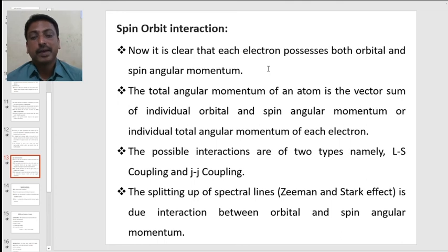The possible interaction between spin and orbit are two: LS coupling as well as JJ coupling. The splitting up of spectral lines like we used to see in case of Zeeman and Stark effect is especially due to the interaction between the orbital as well as the spin angular momentum. Spin-orbit interaction is responsible for the spectral lines to be split into a number of components. Thank you students.